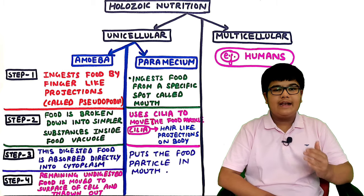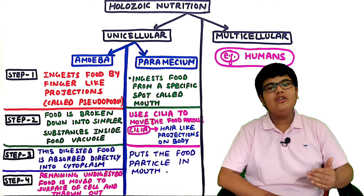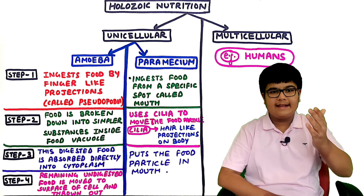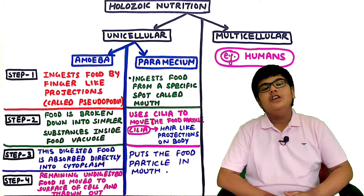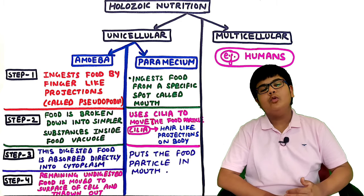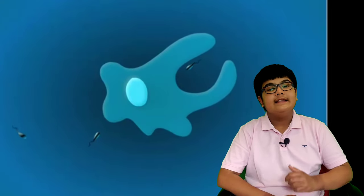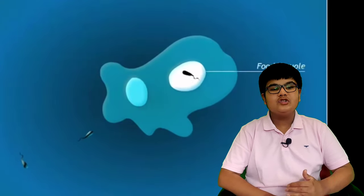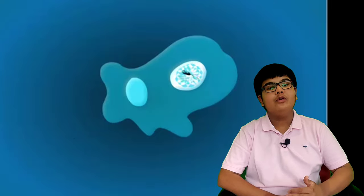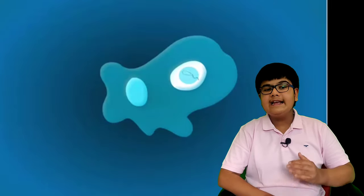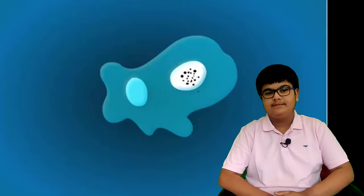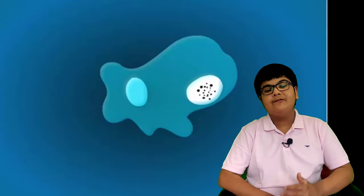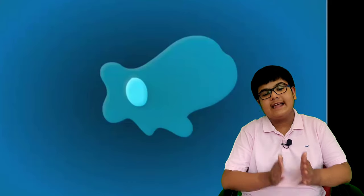Let's see examples of unicellular organisms carrying out holozoic nutrition. First, Amoeba - it ingests food by finger-like projections called pseudopodia. The food is broken down into simpler substances inside the food vacuole. This digested food is absorbed directly into the cytoplasm, and remaining undigested food is thrown out of the cell.